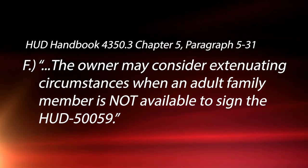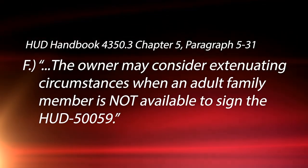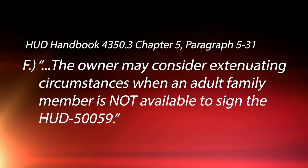Hi and welcome to part two of our Tuesday tip today. Again I have with me Deanna Baker, the lead voucher specialist for Navigate Affordable Housing. Last week we talked about the 5-9s not having signatures and we promised to tell you about the extenuating circumstances. HUD says the owner may consider extenuating circumstances when an adult member is not able to sign the 5-9. So Deanna, tell us some extenuating circumstances and how your department handles them.